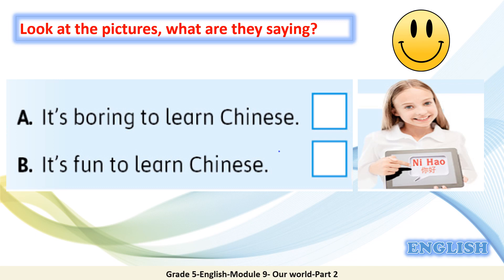Let's play another guessing game and learn more about adjective plus full infinitive. Look at the picture — we have a happy face. Then look at this girl. Is 'It's boring to learn Chinese,' or 'It's fun to learn Chinese'? When we look at this girl, we can say: 'It's fun to learn Chinese.'